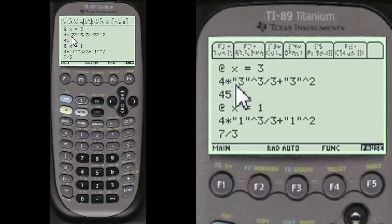At x equals 3, here we're substituting 3 in for all the x's, equals 45. At x equals 1, we substitute 1 for all the x's, 7 thirds.